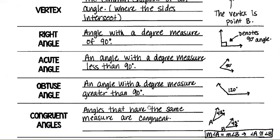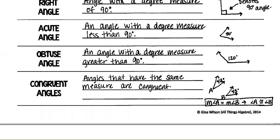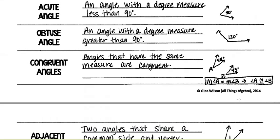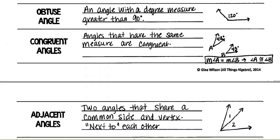Congruent angles: angles that have the same measure are congruent. Angle A and angle B are congruent because they both measure 40 degrees. So the measure of angle A equals the measure of angle B, meaning angle A is congruent to angle B.